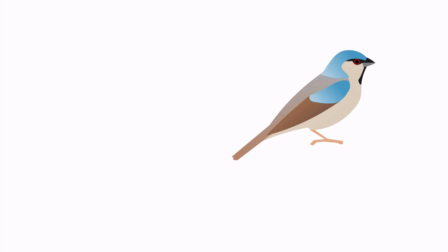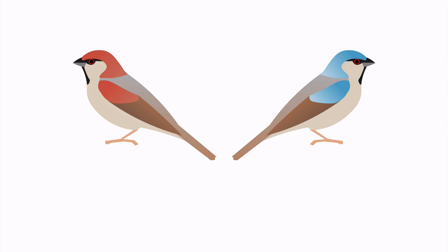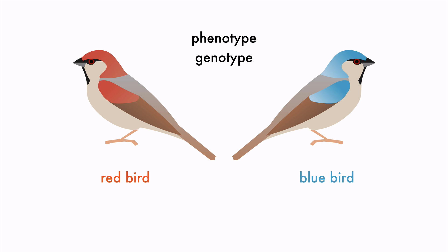In any population of a species, you'll see variations. The phenotype of these birds are red and blue. The genotype in this case is a big B for the red allele and a little b for the blue allele. Because red is dominant, red birds can be homozygous or heterozygous for the trait and still be red.